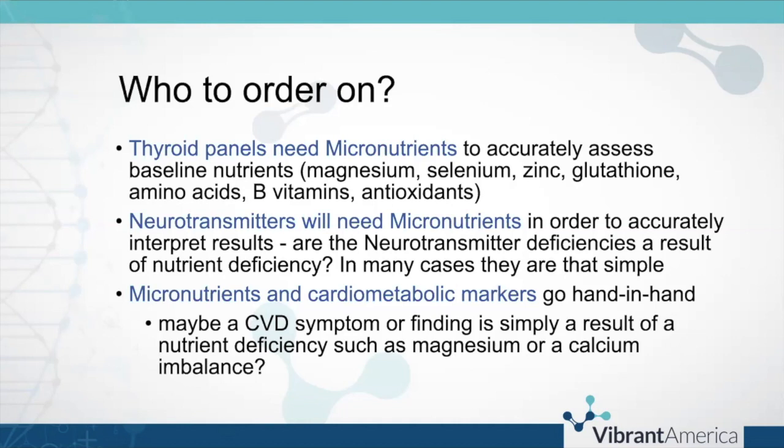Neurotransmitters also need to have a micronutrient test run alongside them. Given the same scenario as thyroid hormones, neurotransmitters — some of which are hormones or peptides — also require certain micronutrients in order to generate them or for them to be converted through their various pathways. So you'll want to look for micronutrient deficiencies in the context of neurotransmitter deficiencies.